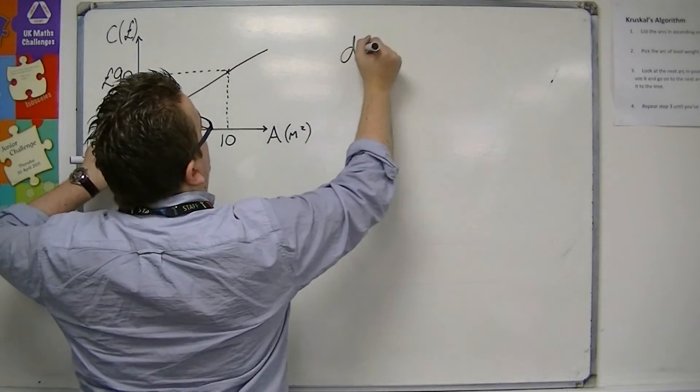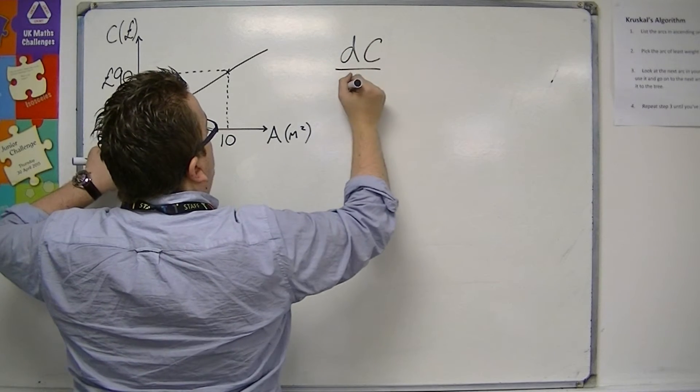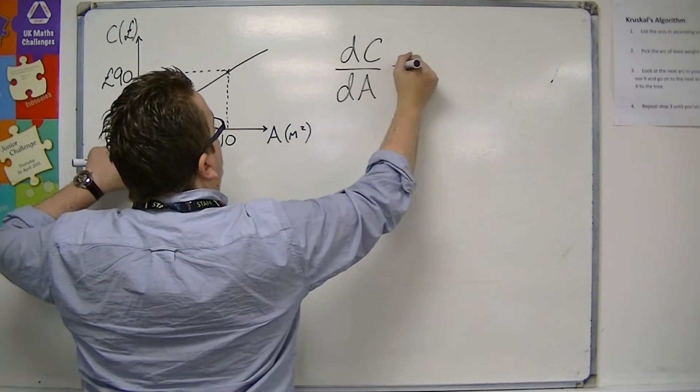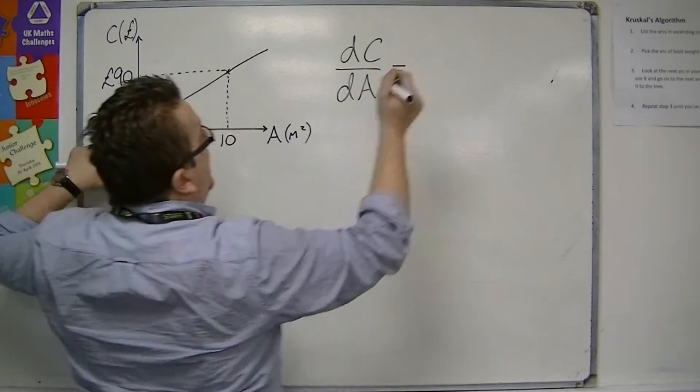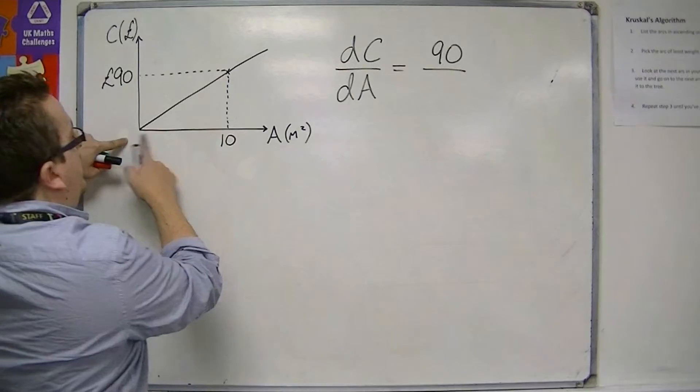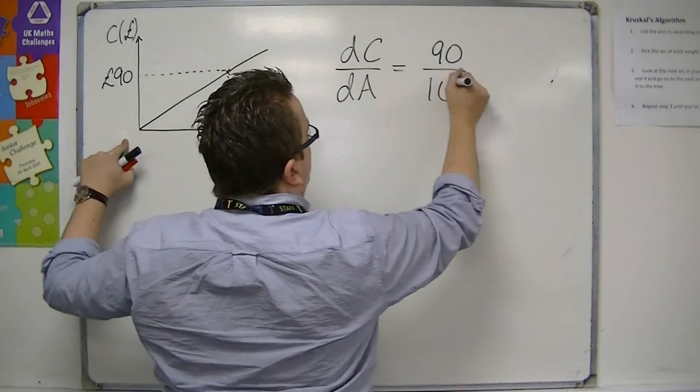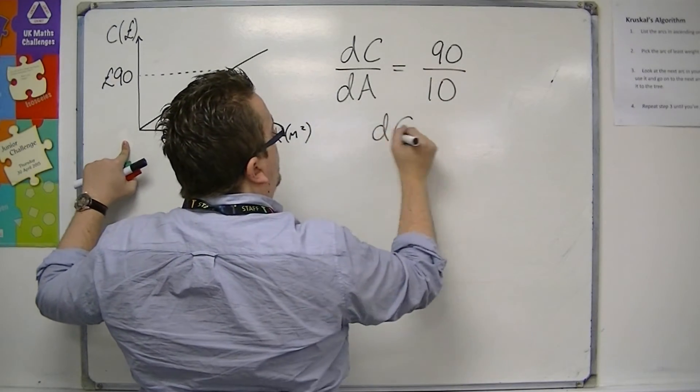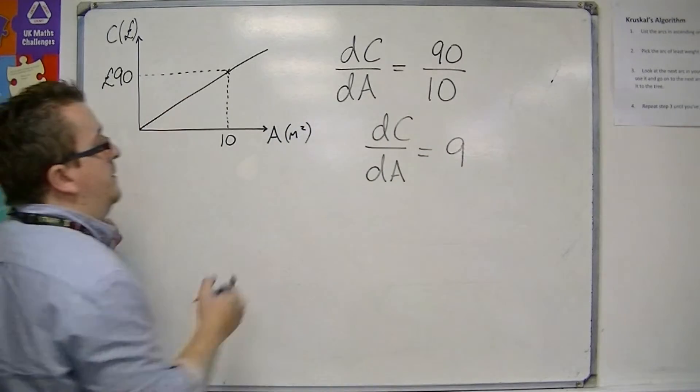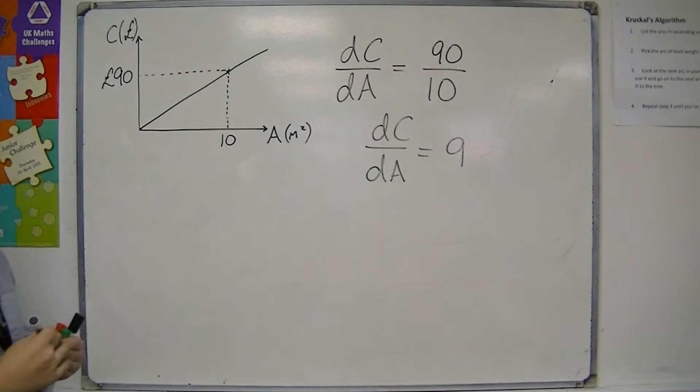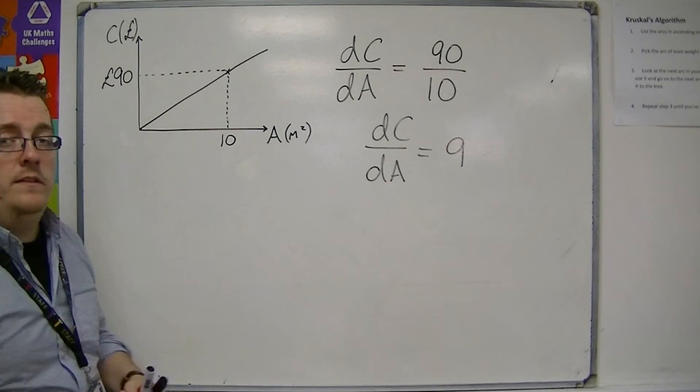The difference in the cost divided by the difference in the area would be represented by £90, because £90 there, over 10. So, dc by dA would be 9. The gradient of this line is 9.